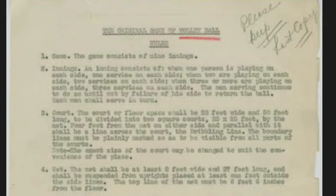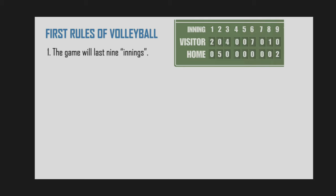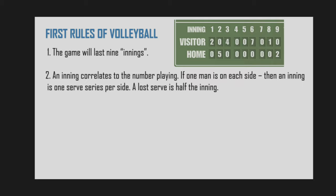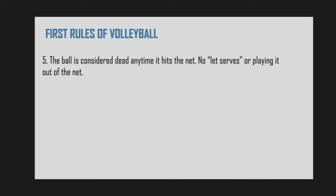Here is a short list of the rules as originally set forth by William Morgan in 1895. Rule 1: the game will last 9 innings. Rule 2: an inning correlates to the number playing — if one man is on each side, an inning is one serve series per side; a lost serve is half the inning. Rule 3: a serve must be struck and hit over the net; the server has two tries to get it in, like tennis; however, if a teammate hits the ball after the service to help it over, it is good. Rule 4: a side only scores when serving, as in side-out scoring.